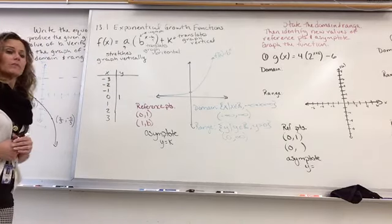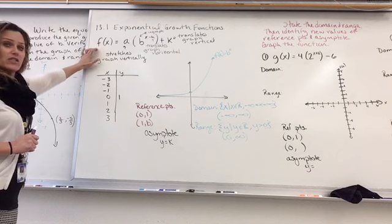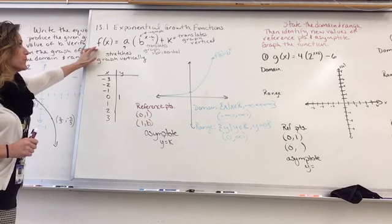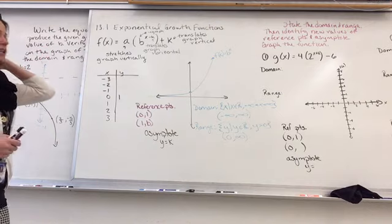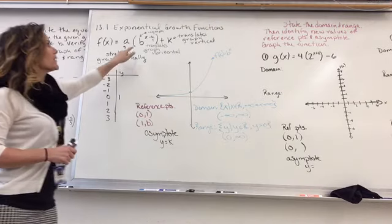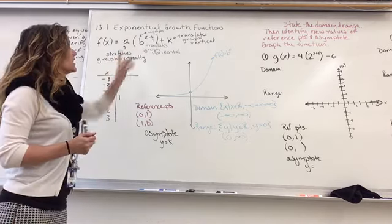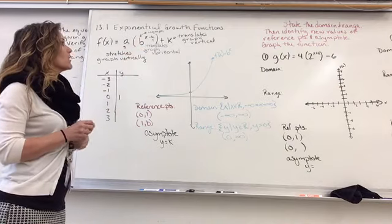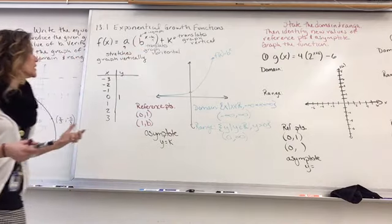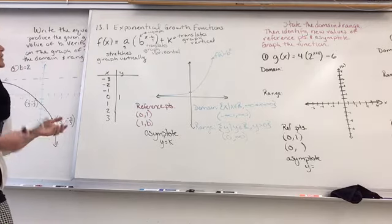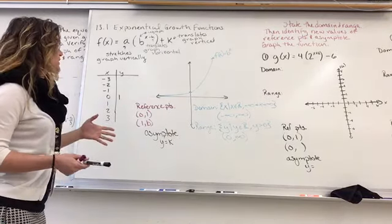Today we're going to be talking about exponential growth functions. This is our general form. A stretches the graph vertically. B is a number inside our graph. H is going to translate the graph horizontally, and K is going to translate the graph vertically. We will not have a horizontal stretch for exponentials.